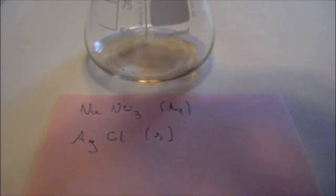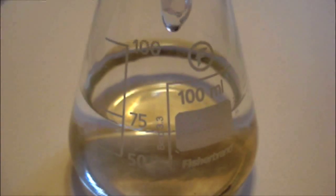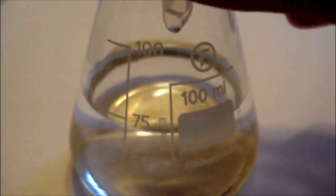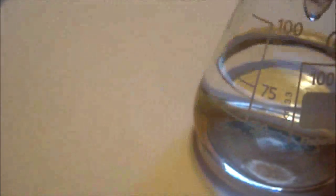You have to filter the solution to get the silver chloride and the sodium nitrate solution. Here is the sodium nitrate solution, which is about 75 milliliters.